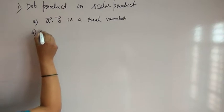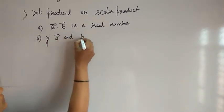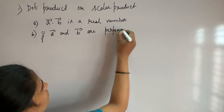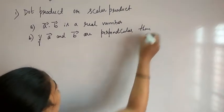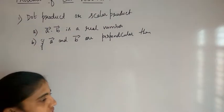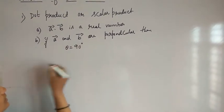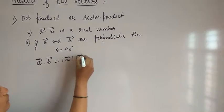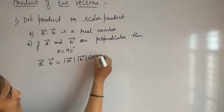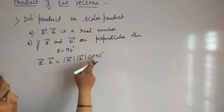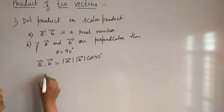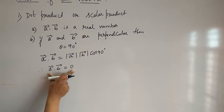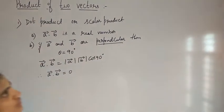If vector A and vector B are perpendicular, then the angle theta is 90 degree. Therefore the dot product becomes vector A dot vector B equals magnitude of vector A into magnitude of vector B into cos theta — theta is 90 degree. The value of cos 90 degree is 0, so 0 into anything is 0. Therefore, we get vector A dot vector B equals 0. This scalar product being 0 means if and only if the two vectors are perpendicular to each other.